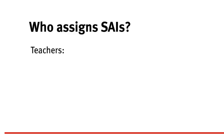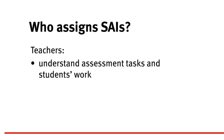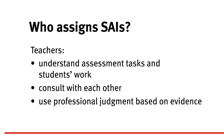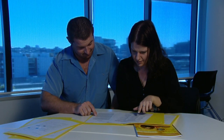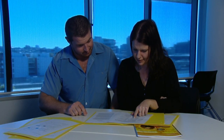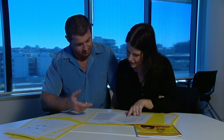Teachers are the best people to assign SAIs. They know the assessment tasks and understand individual differences in students' responses. When there are a number of people teaching the same subject, they should work together to compare students' folios of work. The key to making good decisions about SAIs is to use professional judgment based on the evidence in student folios. SAI decisions should not be based on anything subjective or on personal opinions.